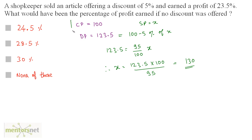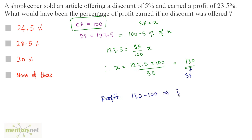The cost price is Rs. 100 and the selling price is Rs. 130. The profit is 130 minus 100, which equals 30. Since the cost price is 100, the profit earned is 30%. So option C is the correct answer.